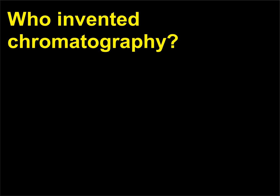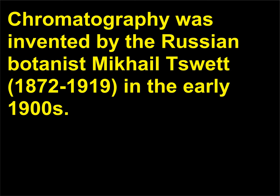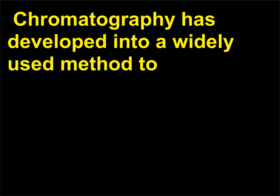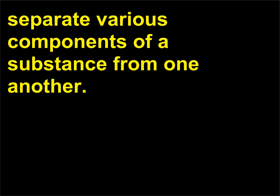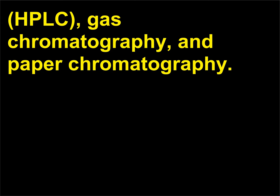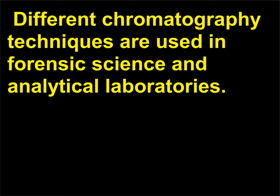Who invented chromatography? Chromatography was invented by the Russian botanist Mikhail Tswett, 1872–1919, in the early 1900s. The technique was first used to separate different plant pigments from one another. Chromatography has developed into a widely used method to separate various components of a substance from one another. Three types of chromatography are high-performance liquid chromatography (HPLC), gas chromatography, and paper chromatography. Different chromatography techniques are used in forensic science and analytical laboratories.